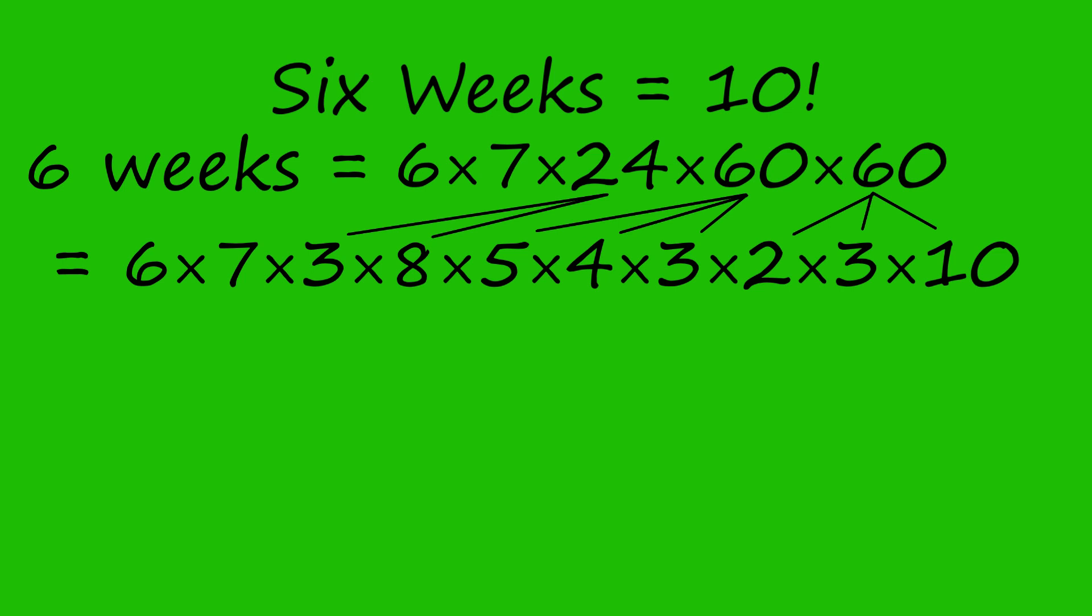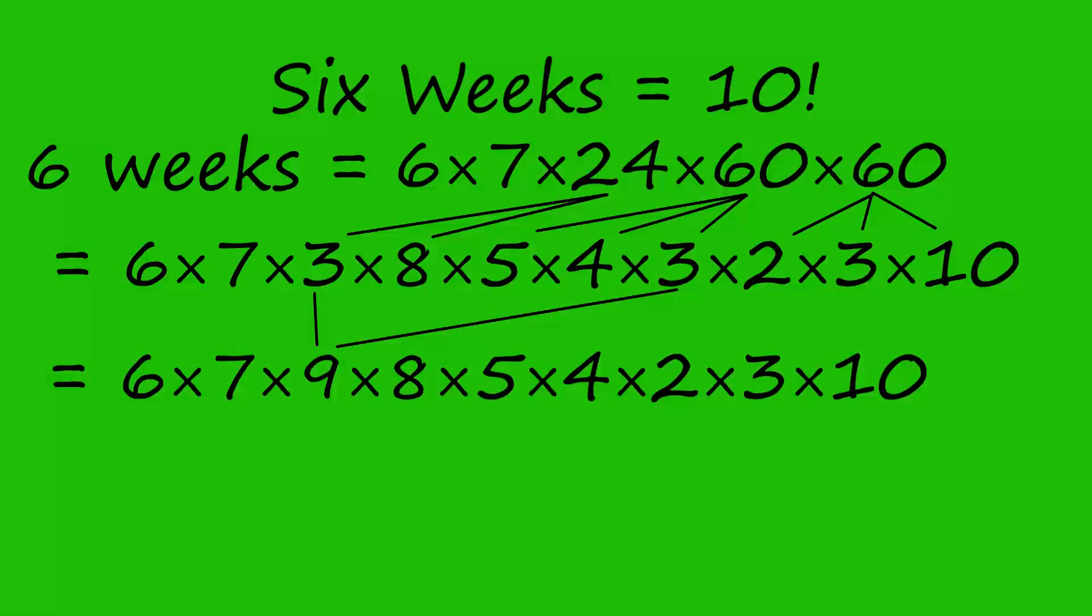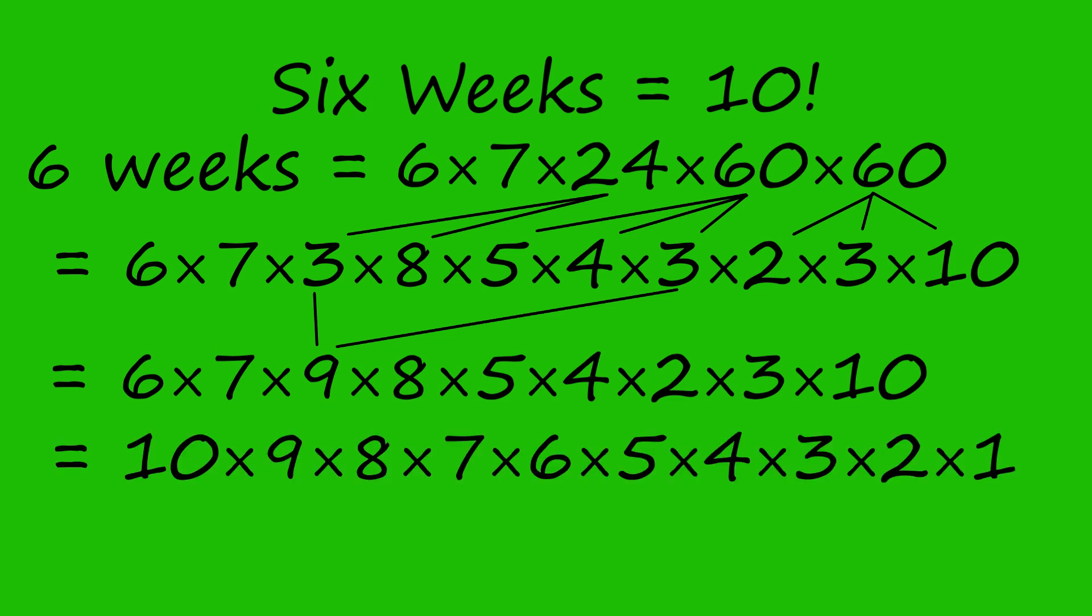That is, six weeks is equal to six times seven times three times eight times five times four times three times two times three times ten. And combining two of the threes into a nine yields six times seven times nine times eight times five times four times two times three times ten. And rearranging that and multiplying by one, since that doesn't change anything, yields 10 times 9 times 8 times 7 times 6 times 5 times 4 times 3 times 2 times 1, which is 10 factorial seconds.